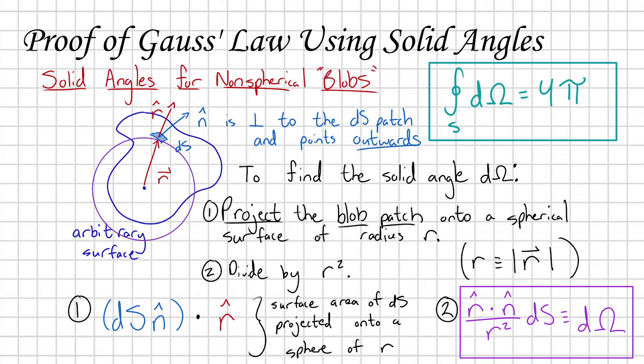Because by repeating this process over and over again for every single patch on your blob, you're going to be building up the surface of a unit sphere. And earlier we showed that the solid angle subtended by a closed sphere is 4π.